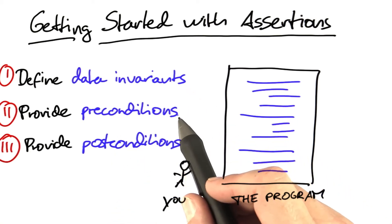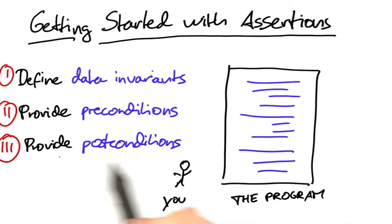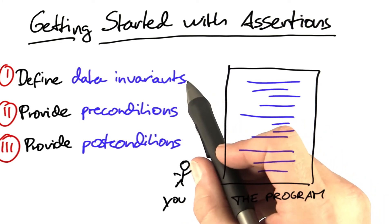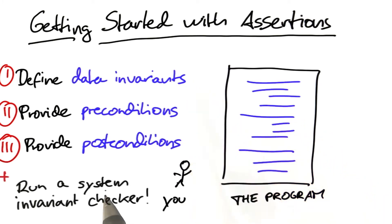Why do we start with data invariants and preconditions? Well, because they're usually way easier to write, catch lots of bugs, and because we only care about whether a method works or not if it actually gets the correct argument and gets a correct state to begin with. On top of that,